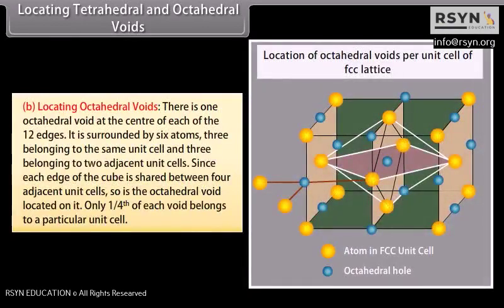Locating octahedral voids: there is one octahedral void at the centre of each of the twelve edges. It is surrounded by six atoms — three belonging to the same unit cell and three belonging to two adjacent unit cells. Since each edge of the cube is shared between four adjacent unit cells, so is the octahedral void located on it. Only one fourth of each void belongs to a particular unit cell.